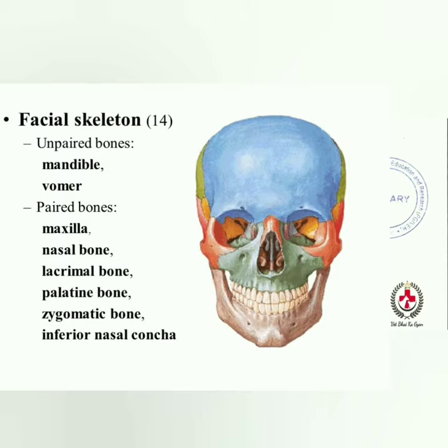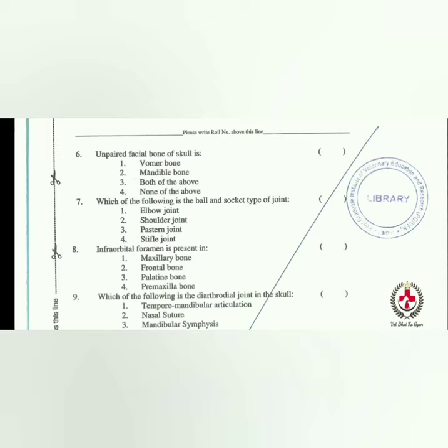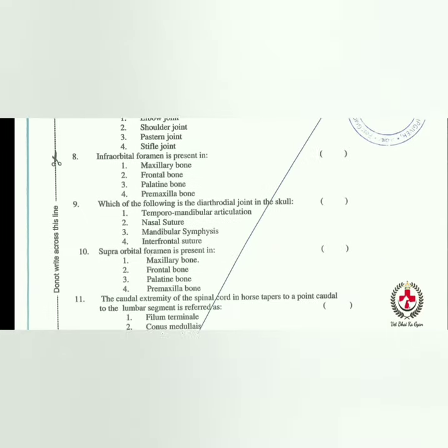The unpaired facial bone of the skull includes the vomer and the mandible — remember both. The ball and socket type of joint is the shoulder joint. Infra-orbital foramen is present in the maxillary bone. The diarthrodial joint in the skull is the temporomandibular joint.